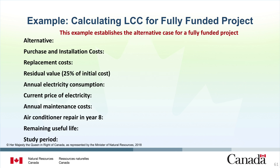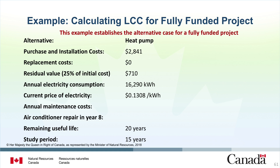For the base case, we assume current equipment has been maintained and there are no required purchasing or installation costs. There are zero replacement costs because the equipment is maintained throughout the study period. The equipment will be at the end of its useful life by the end of the study period, so there will be no residual value. It currently uses 19,800 kilowatt hours of energy annually at 13.08 cents per kilowatt hour. There are annual recurring maintenance costs of $350 and the air conditioner equipment requires repair in year 10 at a cost of $1,500. Both the remaining useful life and study period for the equipment is 15 years, so at the end of 15 years the equipment will have no remaining value.